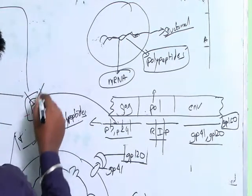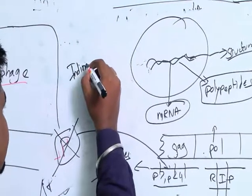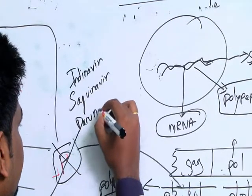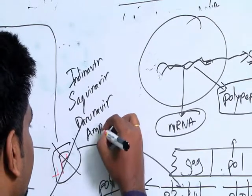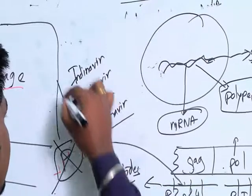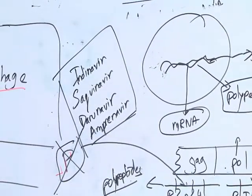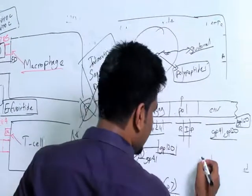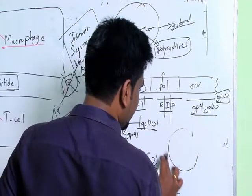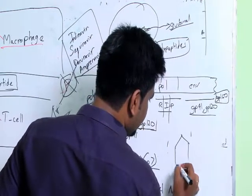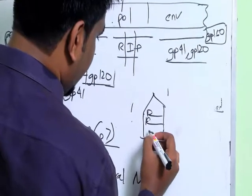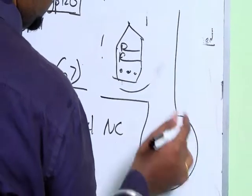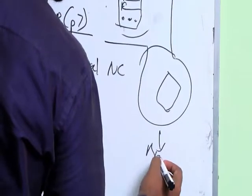Drugs that block protease function are called protease inhibitors. These include indinavir, saquinavir, darunavir, amprenavir, and others. After formation of all structural components, the virus assembles with a nucleocapsid, two strands of RNA, and the RIP enzymes, then leaves the host cell by stealing its lipid membrane, forming a new HIV virion.